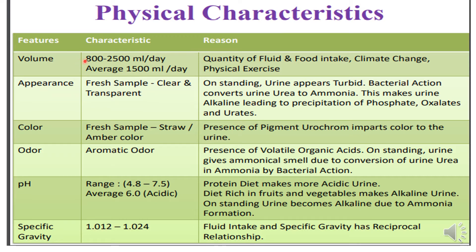So volume — on an average, 800 to 2500 ml is excreted in normal urine, but it also depends upon the quantity of fluid intake, the climate change, and physical exercise. On an average, a human being will excrete 1500 ml per day.